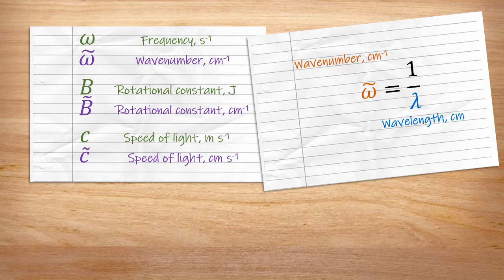Converting to wavenumbers is as simple as 1 divided by wavelength. They're the inverse of each other.